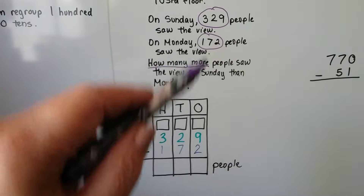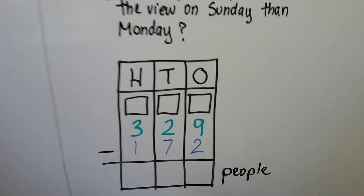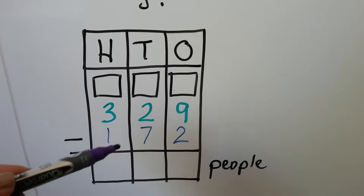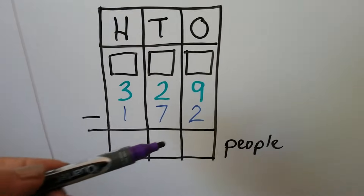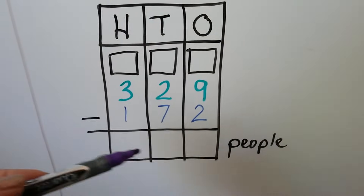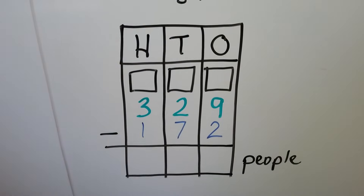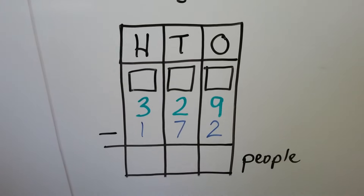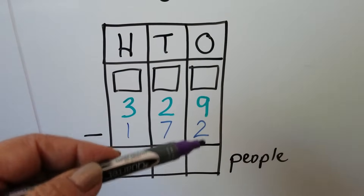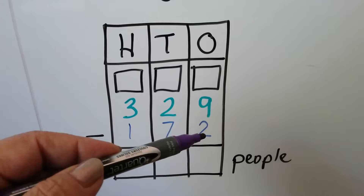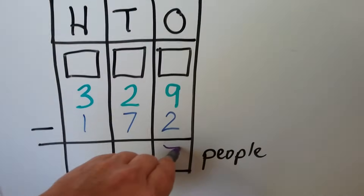We can use a work mat with hundreds, tens, and ones. We have our two numbers: 329 and 172. When we subtract 172 from 329 we'll get the difference and know how many more people were there on Sunday than Monday. In the ones place, where we start, we have 9 take away 2 — that's an easy one, that's 7.